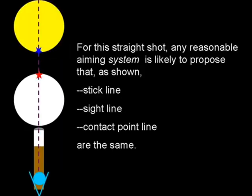Here's a picture of a straight-in shot or a full shot. The red star and the blue star are the cue ball contact point and the object ball contact point, respectively. When the cue ball reaches the object ball, these are the two points that are going to hit one another. Also shown on here is the stick line. And on top of that is the sight line, as indicated by the blue eye over top of the stick. Like shown here, the stick line, the sight line, and the contact point line are all the same line for this straight shot. And it's hard to imagine any reasonable aiming system proposing anything different than this.